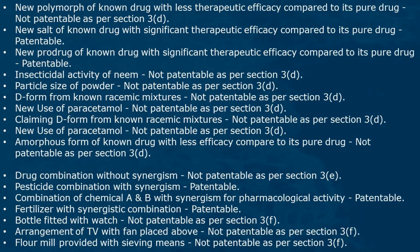A new polymorph of a known drug with less therapeutic efficacy compared to its pure drug is not patentable as per section 3d. A new salt of a known drug with significant therapeutic efficacy compared to its pure drug is patentable. A new prodrug of a known drug with significant therapeutic efficacy compared to its pure drug is patentable. Insecticidal activity of a known substance is not patentable as per section 3d.